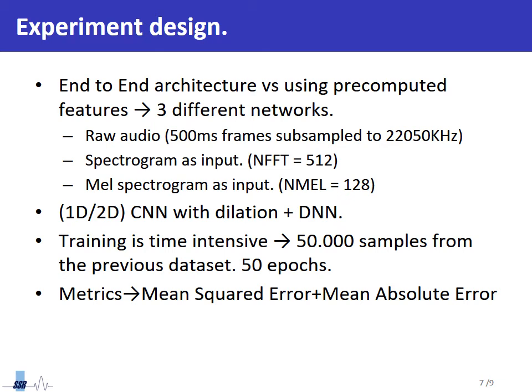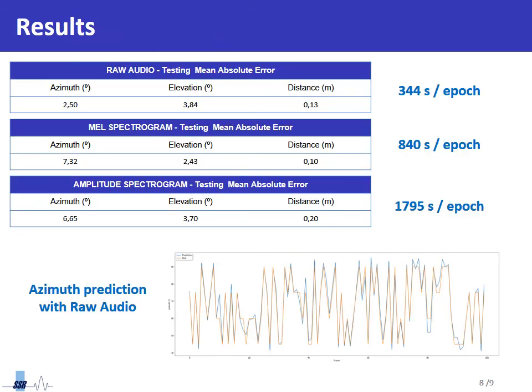In the training process, we used the mean square error as a metric, but we also computed mean absolute error in order to compare the different results. Once all the networks were trained, we obtained the results depicted in this slide. We can say that all networks succeed in predicting azimuth, elevation, and distance of the source with an acceptable level of accuracy. The best results are obtained with the end-to-end architecture, that is, the one using raw audio as input, with errors of a couple of degrees that are similar to the errors presented in the DRAGON paper using signal processing methods. The architectures that use pre-computed features obtain worse results than the one using raw audio, while also taking longer time to train.